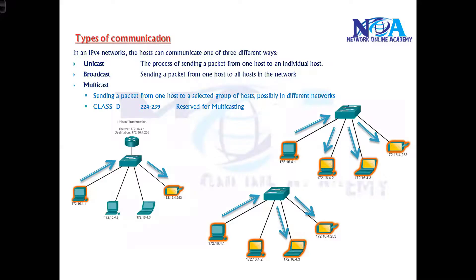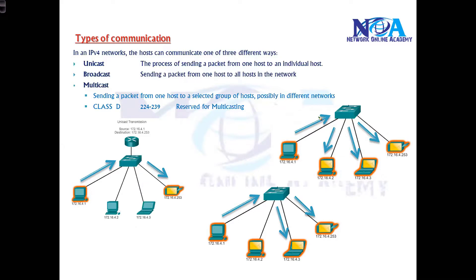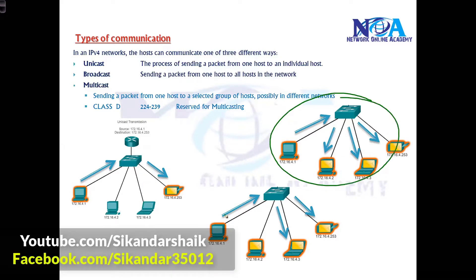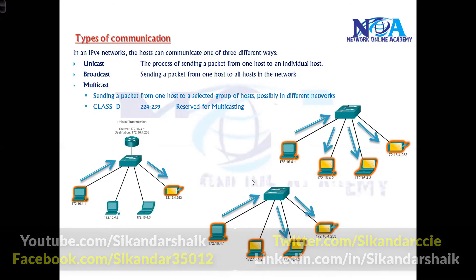To summarize: unicast is one-to-one — you send a request to one device and it replies, like a ping command, web request, or Telnet session. Broadcast is one-to-all — one device sends to everyone in the network and everyone receives. Multicast is one-to-a-group — only a specific set of individuals receives that particular message.